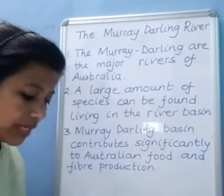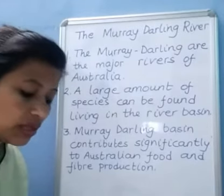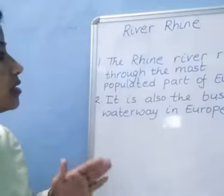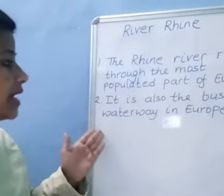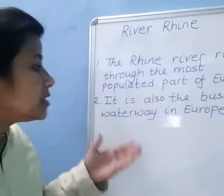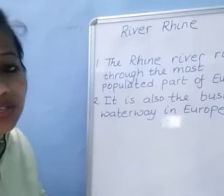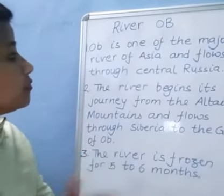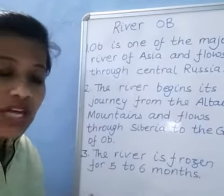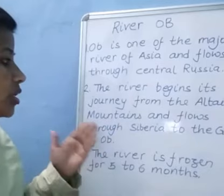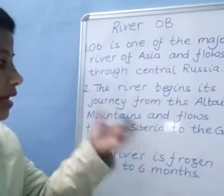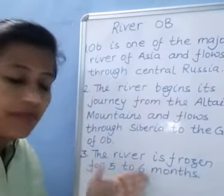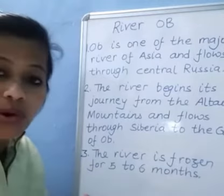The river drains most of inland Victoria, New South Wales and southern Queensland. River Rhine flows in Europe. The Rhine river runs through the most populated part of Europe and is also the busiest waterway in Europe. River Obi is one of the major rivers of Asia and flows through Central Asia and Central Russia. The river begins its journey from the Altai Mountains and flows through Siberia to the Gulf of Obi. That's why the river is frozen for five to six months.